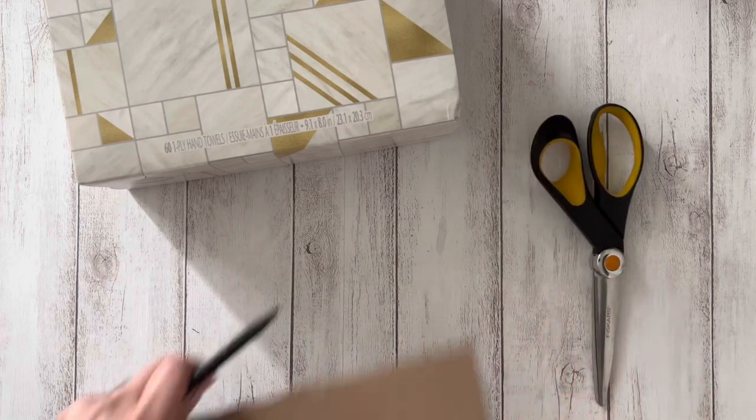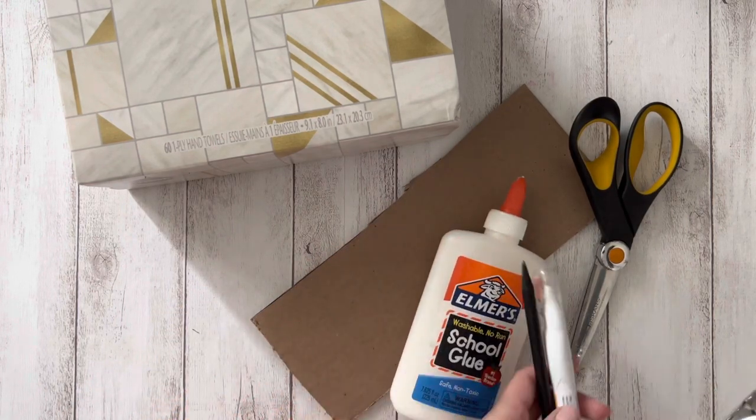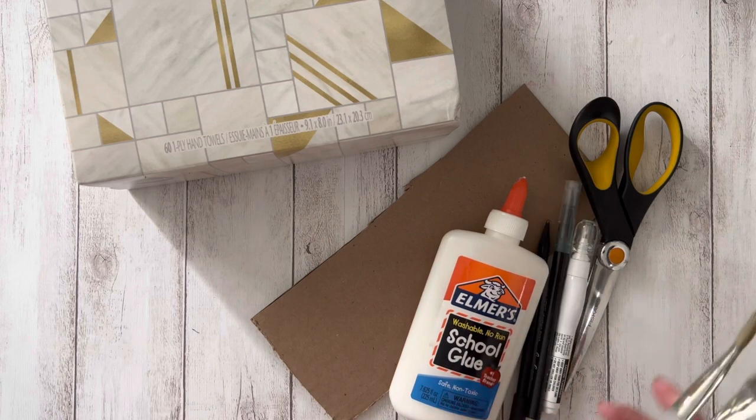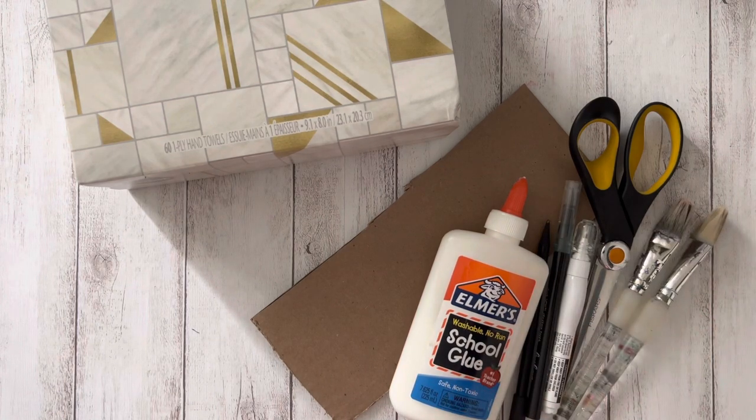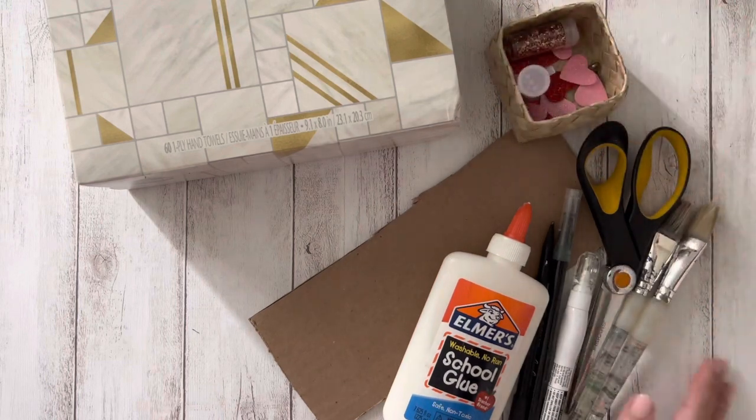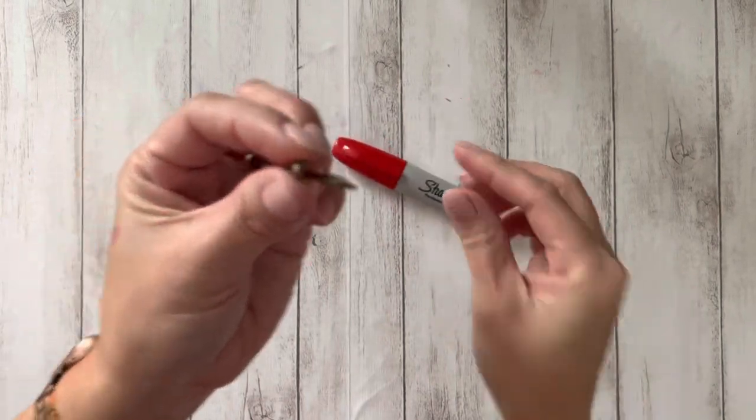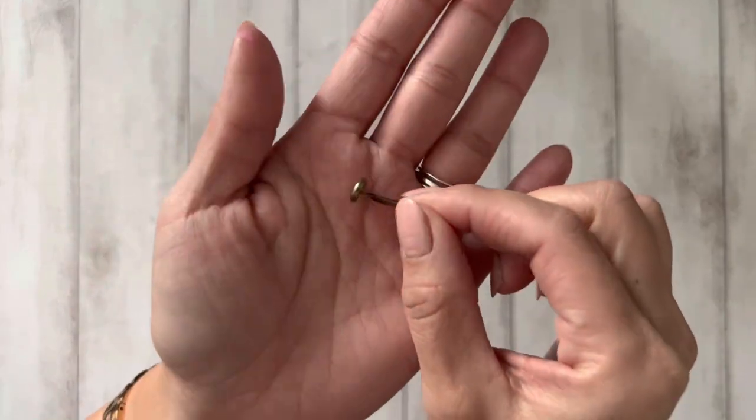The supplies you'll need are a tissue box, scissors, a piece of cardboard, glue, a pencil, some markers, paintbrushes along with paint, and some heart cutouts and glitter or anything you'd like to decorate your container with. You'll also need a red sharpie and one of these fasteners.